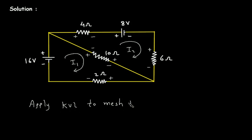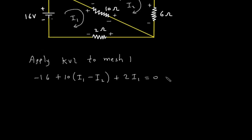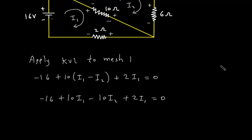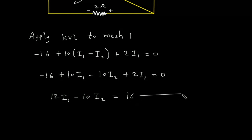Apply KVL to mesh 1. Starting from here: minus 16, plus 10(I1 - I2), plus 2I1 is equal to 0. Collecting terms: 12I1 minus 10I2 equals 16. Let's call this equation number 1.